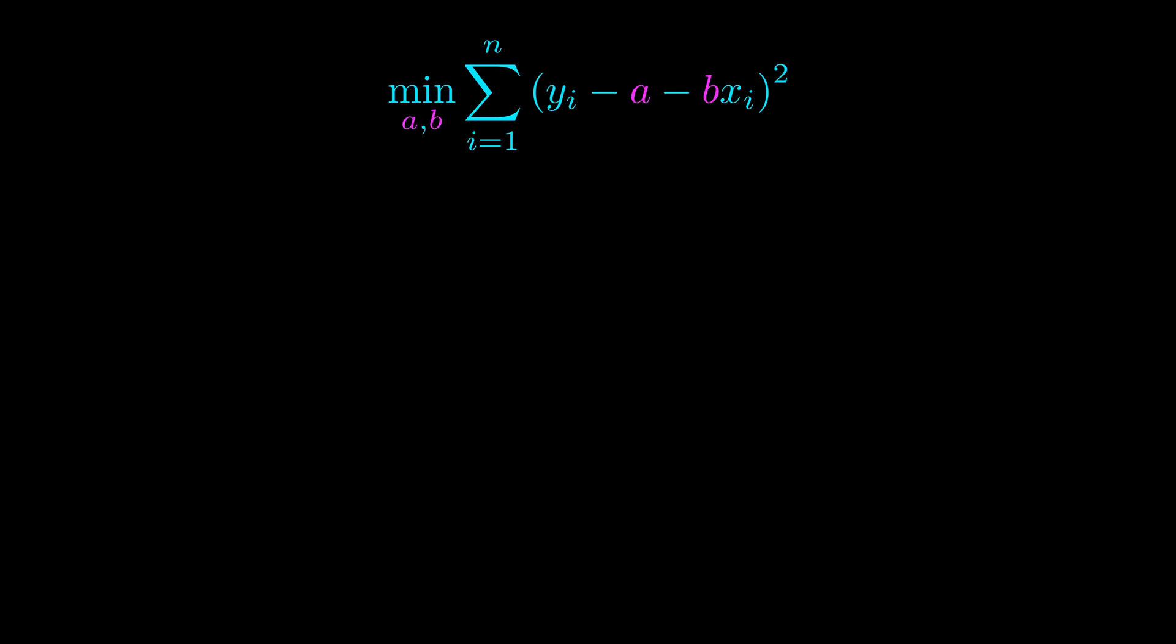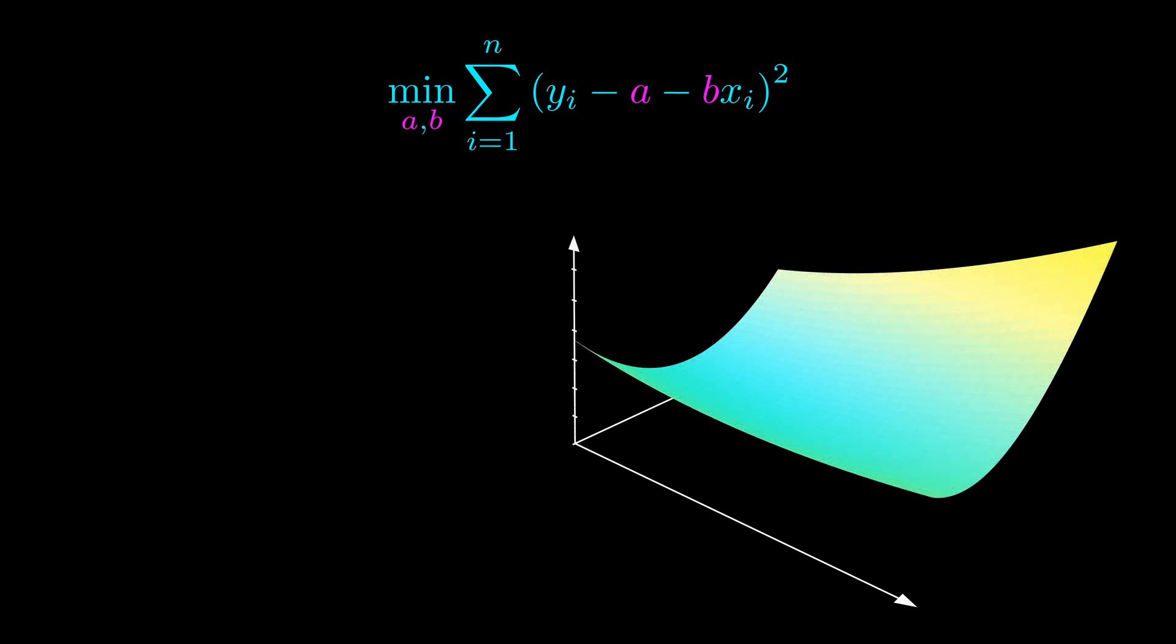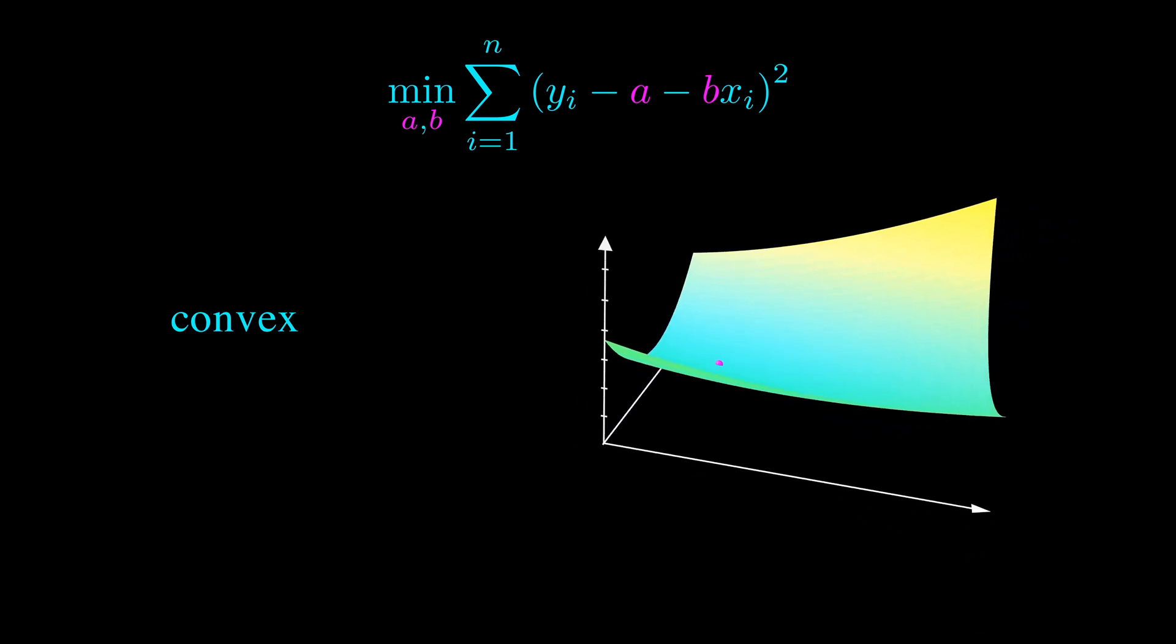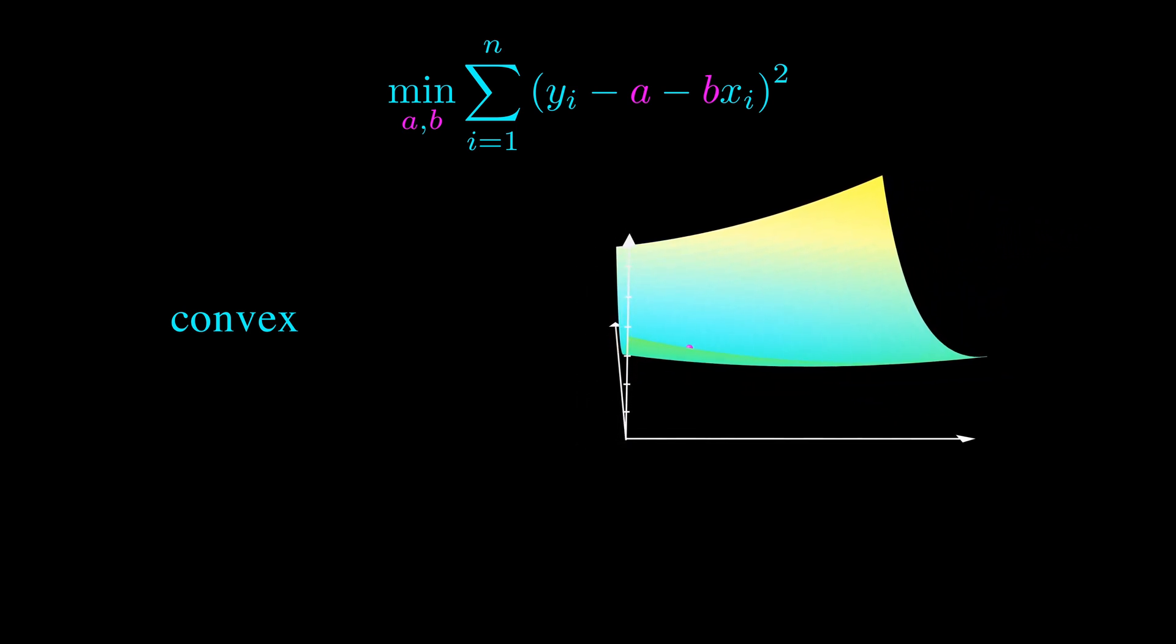Remember that a and b are the variables we're trying to find. Because there are two variables, we can plot the objective function in three dimensions. Graphically, the function looks something like this. This function is convex, which intuitively means it's shaped like a bowl. We want to find a point at the bottom of this bowl, where this purple dot is located.